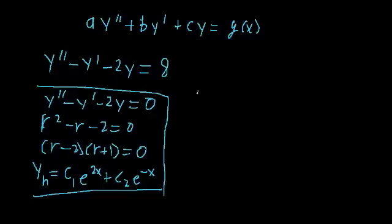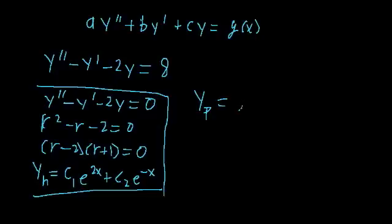Now let's work on the particular solution. We try to guess a form of y_p based off the form of g(x). Here, g(x) is just 8 — it's just a constant. So let's guess that our particular solution is also just a constant, say a. We're going to plug this guess into the differential equation and try to find a value for a that will satisfy it.